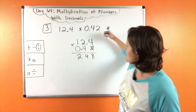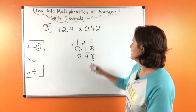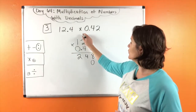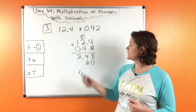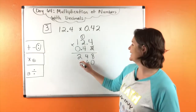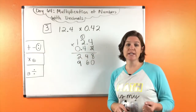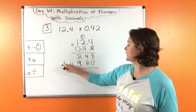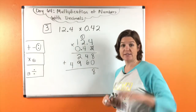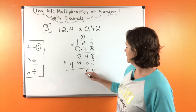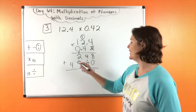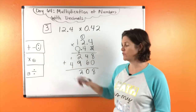Cross out, erase — but there's nothing to erase — and place a zero. Four times four would be sixteen. Four times two is eight, plus one is nine. And four times one is four. Alright, we're going to add them up now. Eight plus zero is eight. Four plus six is ten. One plus two plus nine is twelve. One plus four is five.